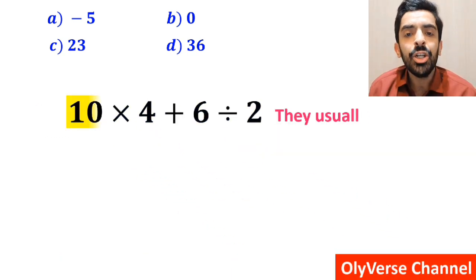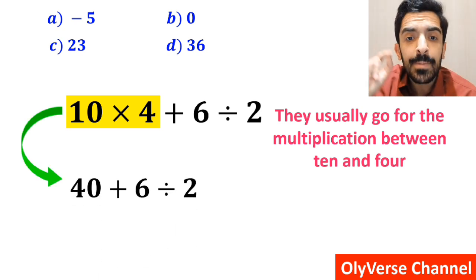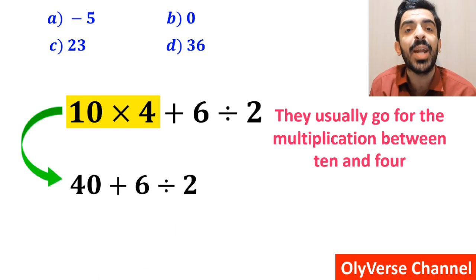And the next step they usually go for the multiplication between 10 and 4 and replace this expression with 40 plus 6 divided by 2.